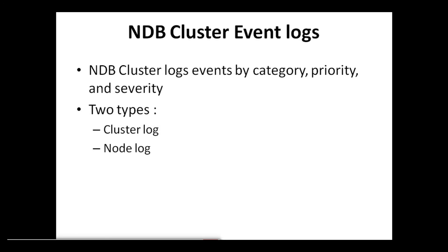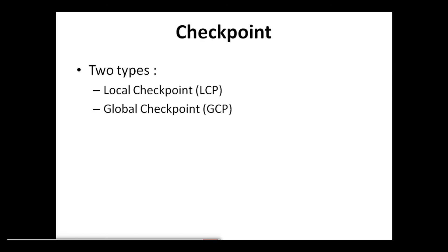NDB Cluster logs events by category — startup, shutdown, errors, checkpoint, and so on — as well as by priority and severity. Event logs are of two types: the cluster log, which keeps a record of all desired reportable events for the cluster as a whole, and the node log, which is a separate log kept for each individual node. A checkpoint is a point in time where all committed transactions are stored on disk. The NDB storage engine has two types of checkpoints that work together to maintain a consistent view of the cluster's data.